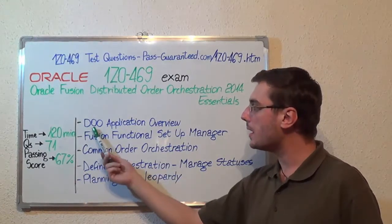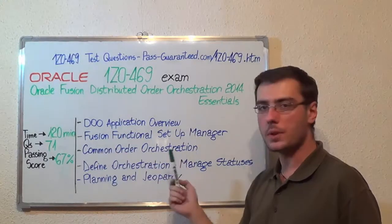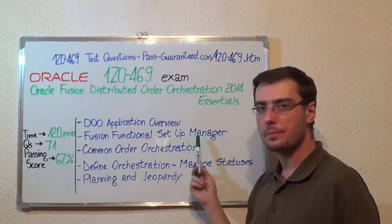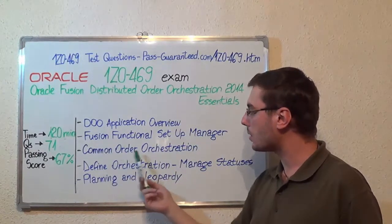The first one, DOO Application Overview. Second, Fusion Functional Setup Manager. After that, Common Order Orchestration.